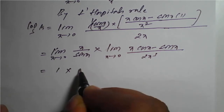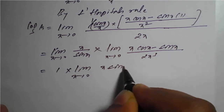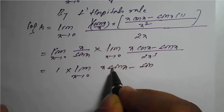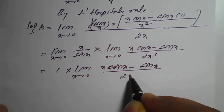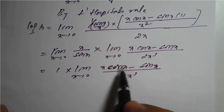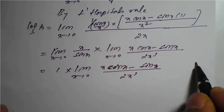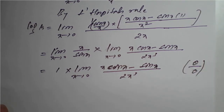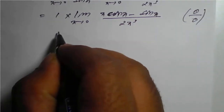So we have 1 into limit x tends to 0 of (x cos x minus sin x) divided by 2x cubed. If we apply x equal to 0: 0 times cos 0 is 0, so the numerator is 0 minus 0 equals 0, and the denominator 2 times 0 cubed is 0. So it is again 0 by 0 form. Again by L'Hôpital's rule.